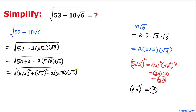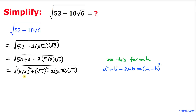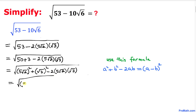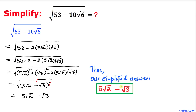This represents a perfect square. If I call this part a squared and this part b squared, then this is a and this is b. We use the well-known formula: a squared minus 2ab plus b squared equals (a minus b) squared. So we can write this as square root of (5 times square root of 2 minus square root of 3) squared. The square and square root undo each other, and we simply get 5 times square root of 2 minus square root of 3.